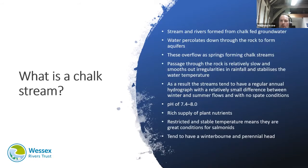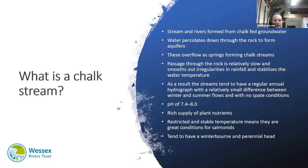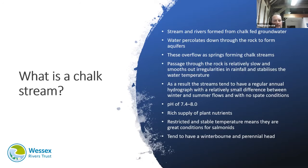So what is a chalk stream? Chalk is a very porous form of limestone, which means it is able to soak up and hold water, much like a sponge. Water moves and percolates through the chalk in cracks called fissures to form and fill underground aquifers or reservoirs, and it can take anywhere between 20 to 40 years for water to filter through these rocks. Once full, the aquifers overflow at ground level in the form of springs that form the chalk streams as we know them. Passage through the rock is relatively slow, smoothing out any irregularities in rainfall, and as a result chalk streams tend to have a regular annual flow regime with a relatively small difference between winter and summer flows and very little in the way of spate conditions, as they receive very little surface runoff.